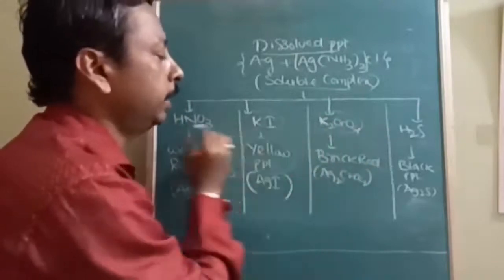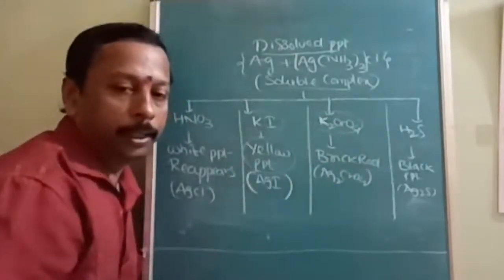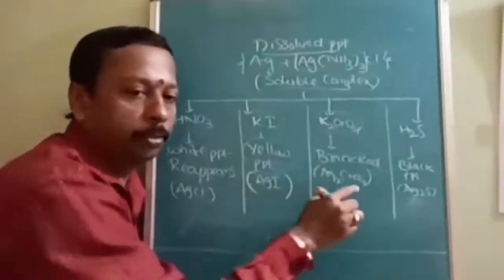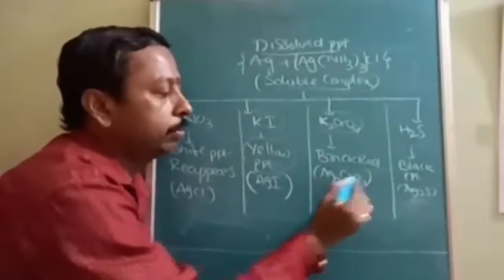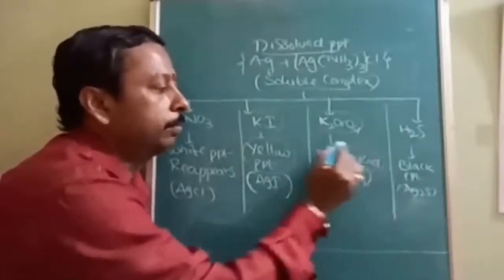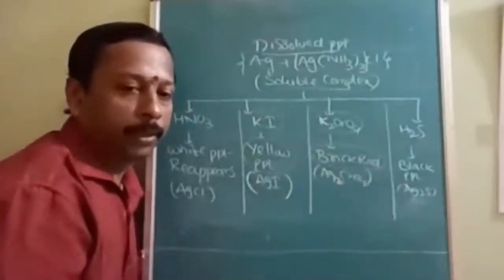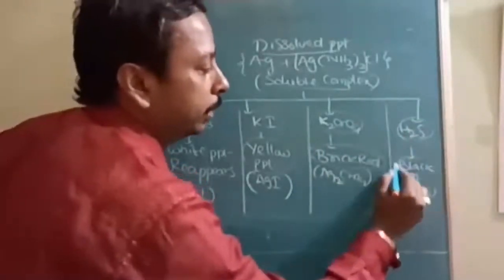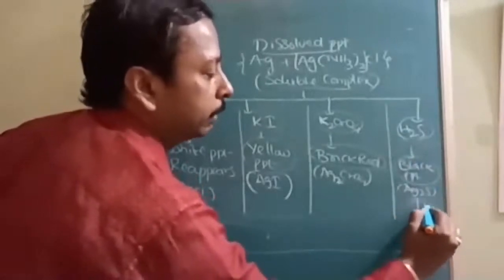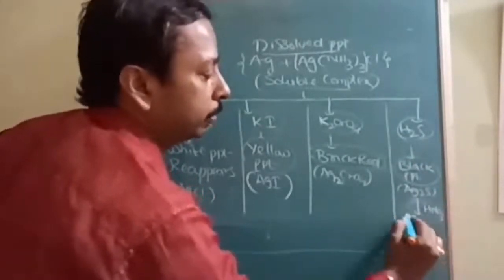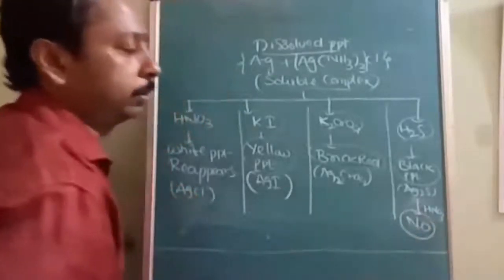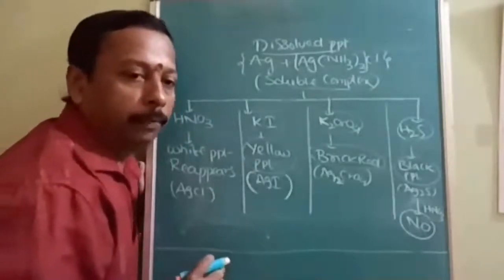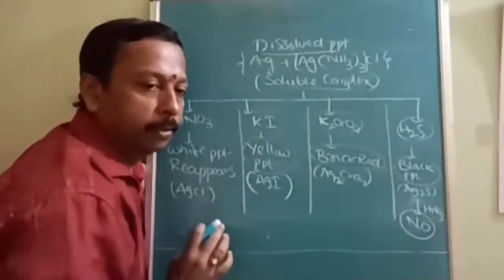The third part is treated with K₂CrO₄, forming a brick red precipitate of Ag₂CrO₄ — the same reagent used for lead, but here forming silver chromate. H₂S is also used, forming a black precipitate, which when treated further with HNO₃ results in the formation of nitric oxide. This confirms the presence of silver in the salt.